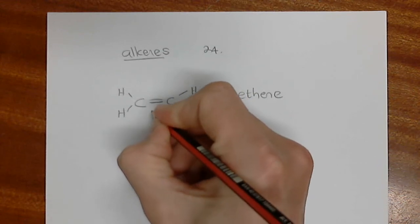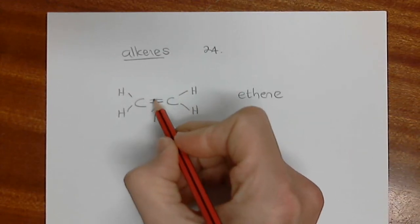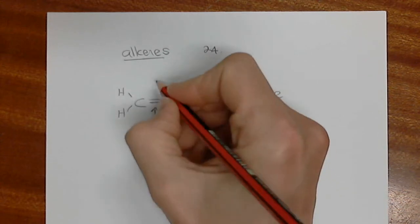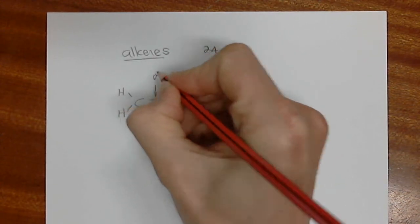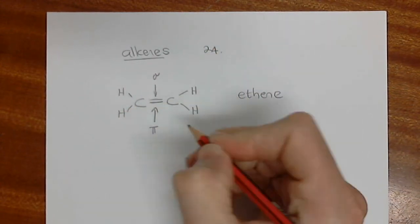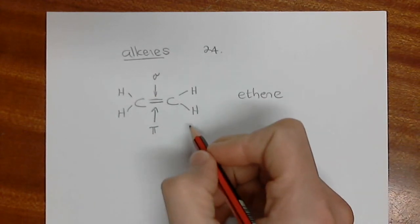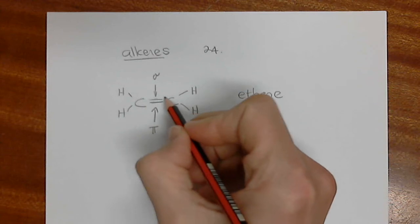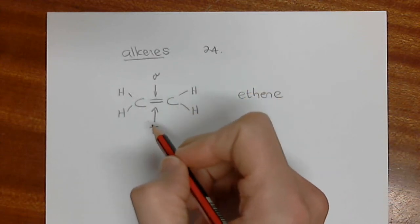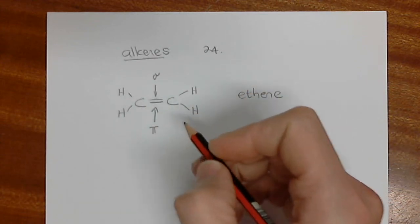So the first thing that's important is that second bond. The first bond between any two atoms is going to be a sigma bond. But the second bond is a pi bond. And if you understand your bonding principles, a sigma bond is the head-on overlap of two orbitals.